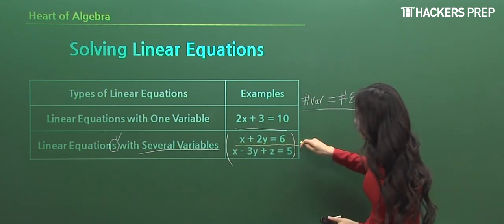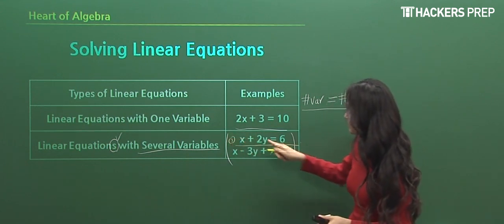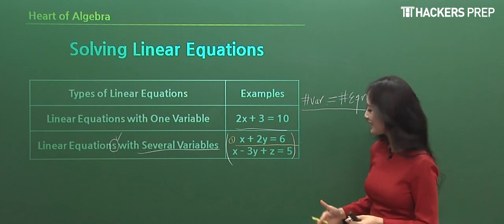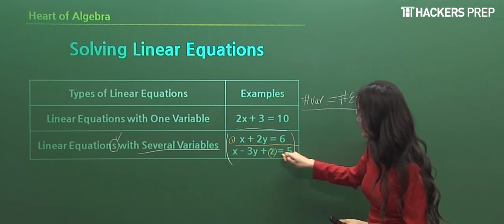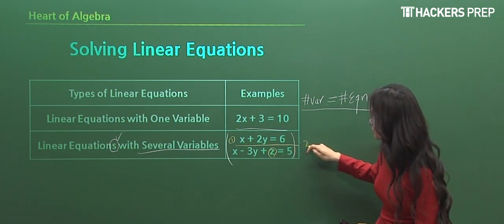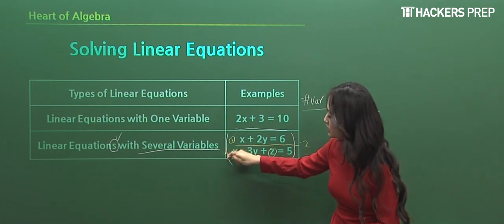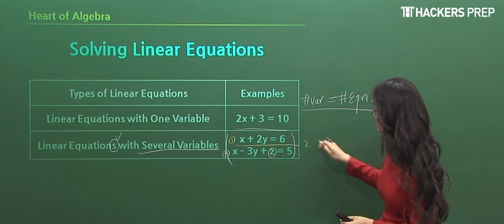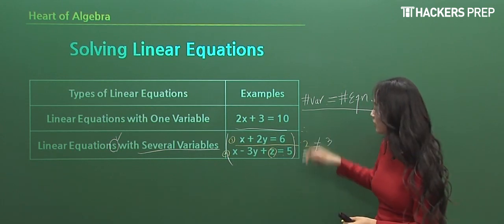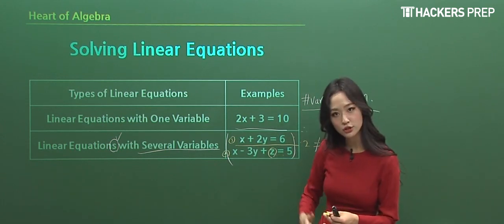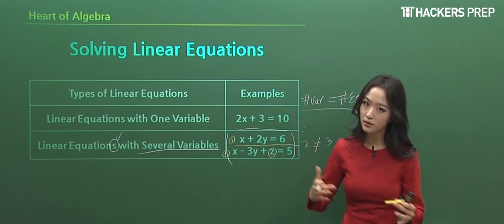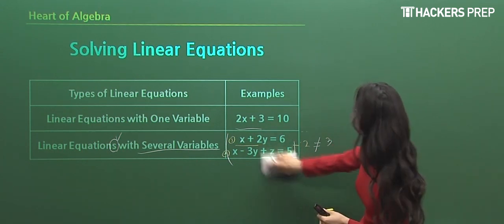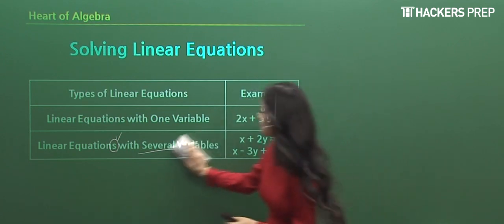Does that make sense? So for the example equation here, when the first one states x plus 2y is equal to 6, and then the second one says x minus 3y plus z is equal to 5, we have two equations, 1 and 2. How many variables are we involving total? x, y, and z. They don't match. Therefore, we cannot get the solution for each variable. That's the only conclusion that you guys need to memorize. So let's do an example of this concept real quick together.